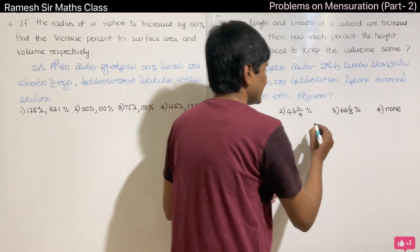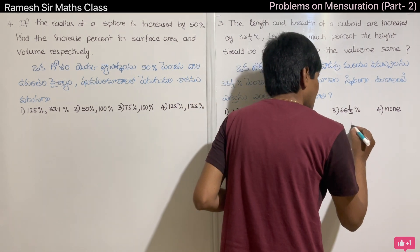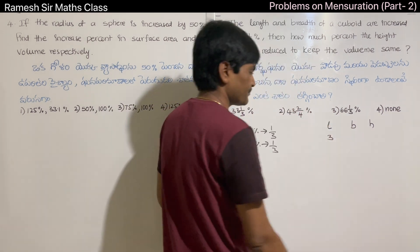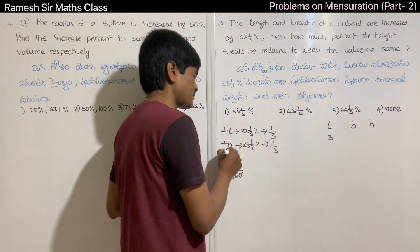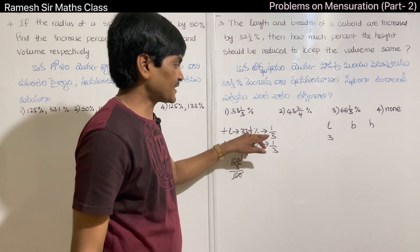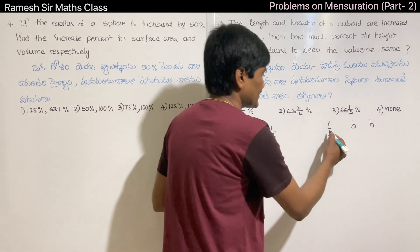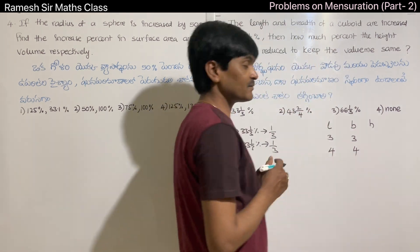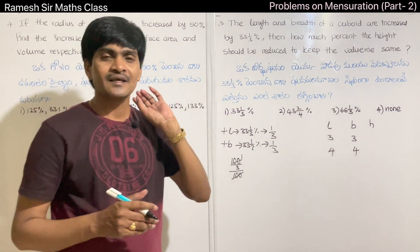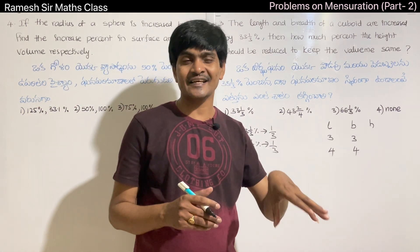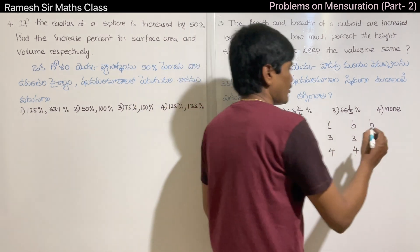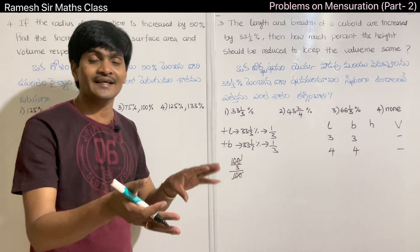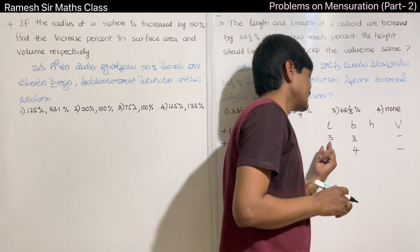We have 3 measurements: length, breadth, and height. Original length is 3 units. Both length and breadth increase — every 3 units becomes 4 (since 3 plus 1 is 4). The breadth is also 3 units, becoming 4. Now we need to find what the height should become.